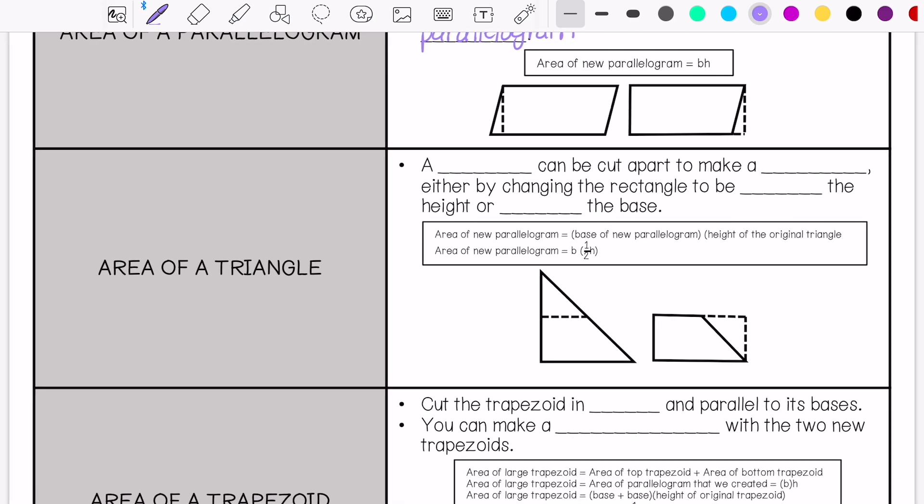For the area of a triangle, a triangle can be cut apart to make a rectangle. We can do that by either changing the rectangle to be half of the height or half of the base.